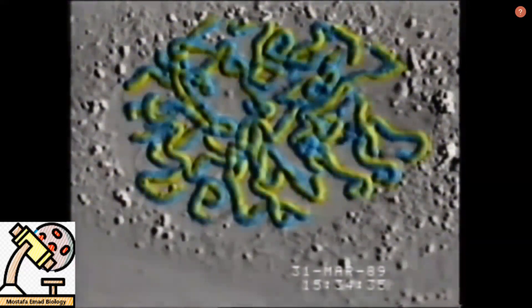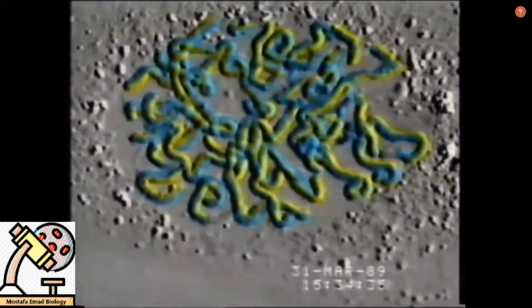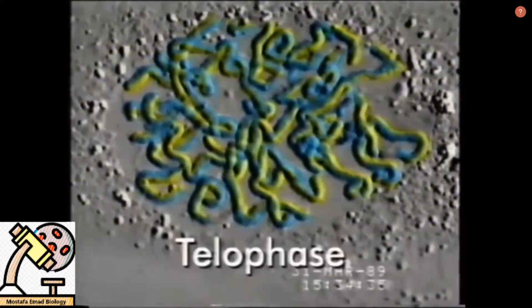During interphase, DNA replicates, and each chromosome doubles itself. Mitosis itself is divided into four stages: prophase, metaphase, anaphase, and telophase.